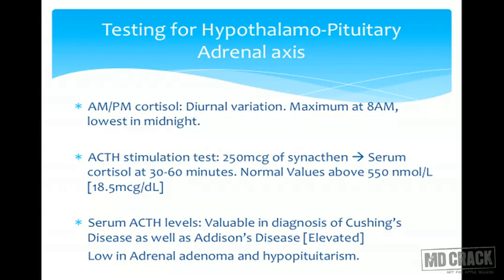In the ACTH stimulation test, we give a synthetic ACTH called synactin and observe the adrenal response at 30 or 60 minutes. Normal values are above 550 nanomoles per litre or 18.5 micrograms per dL. Serum ACTH levels are valuable in diagnosis of both Cushing's and Addison's. Low ACTH levels are seen in adrenal adenomas and hypopituitarism.